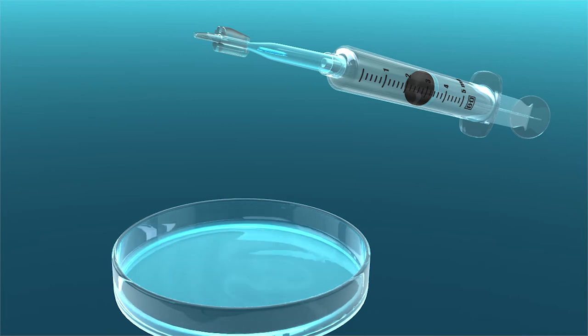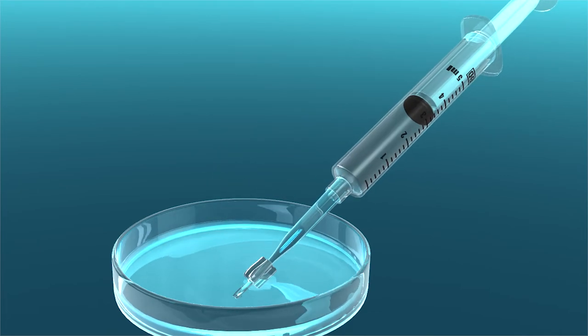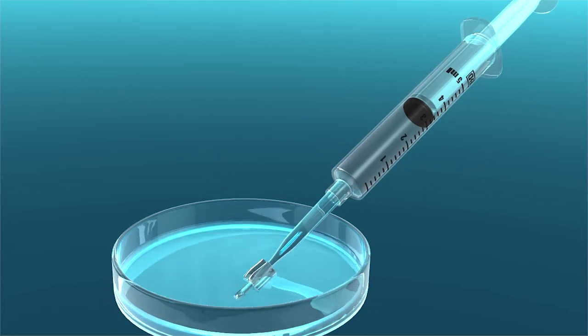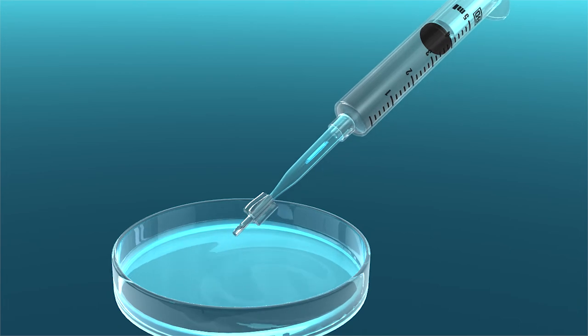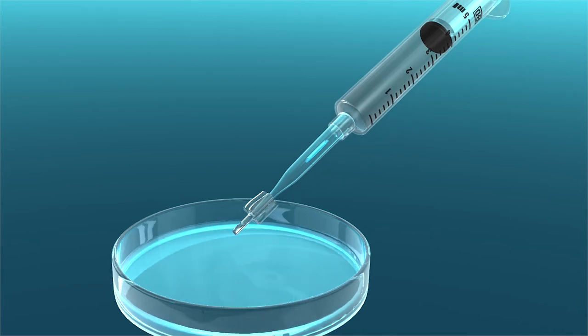If the graft starts to enter the slender end of the cannula, aspirate BSS from the petri dish to reposition the graft while continuing to flush the corneal storage media from the cannula. Do not allow the graft to enter the slender end of the cannula during this process.